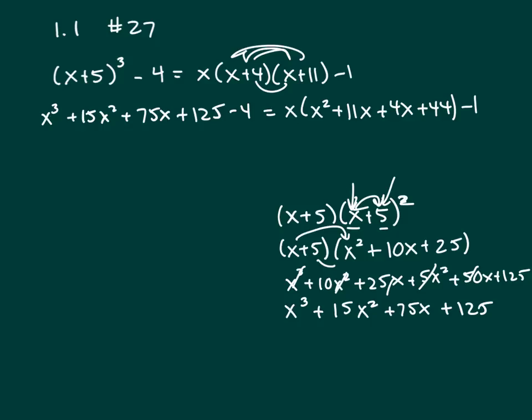And then distribute the 4 plus 4x plus 44. And then bring down the minus 1. Now is that right? x squared plus 11x plus 4x plus 44. Yes. So bring down the left hand side. There's nothing to combine.